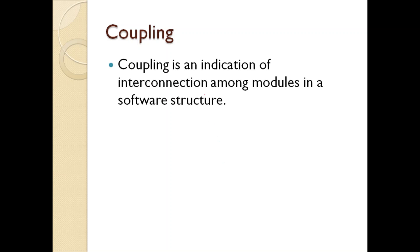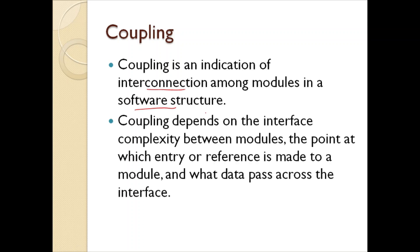Coupling is an indication of the interconnection among modules in a software structure. How they are communicating with other parts or other components or other modules in a particular system. Coupling depends on the interface complexity between modules, the point at which entry or reference is made to a module and what data pass across the interface.